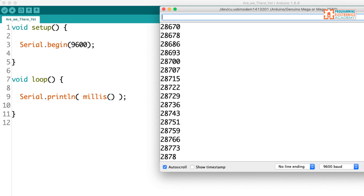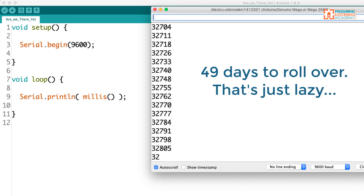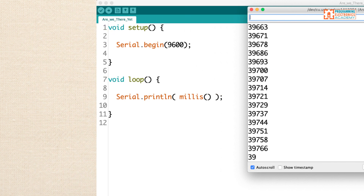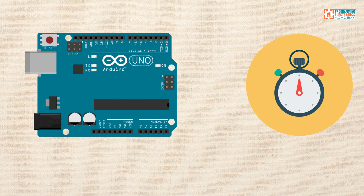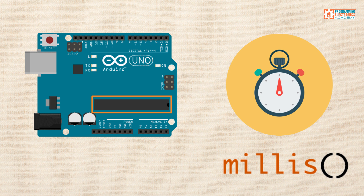And then it overflows, which is just a fancy way of saying it starts counting back at zero. It would take 49 days for the millis function to overflow. The way millis is able to track the number of milliseconds that have passed is by using the timer counter module built into the integrated circuit that the Arduino uses. In our Arduino code, we don't have to start the clock or start millis — it starts all by itself in the background. If you want to learn more about how the millis function works, check out the first lesson in the series.